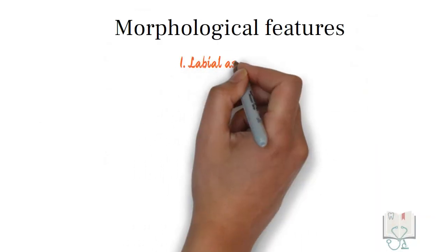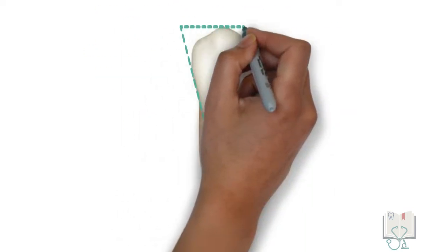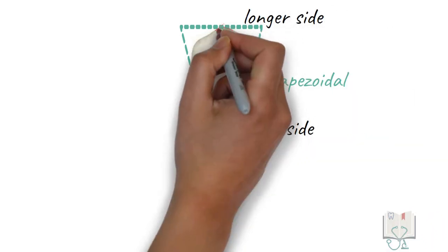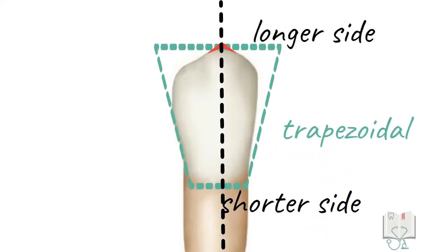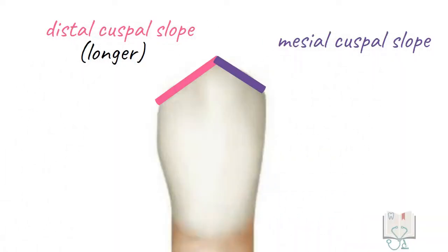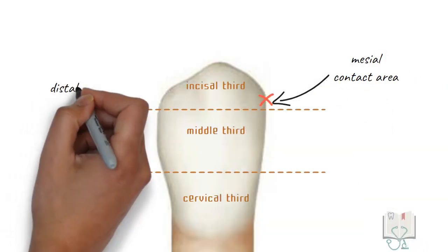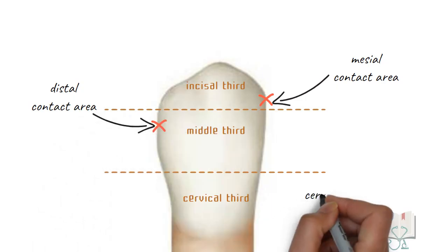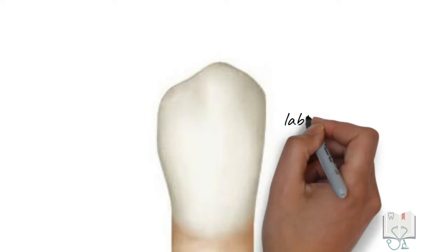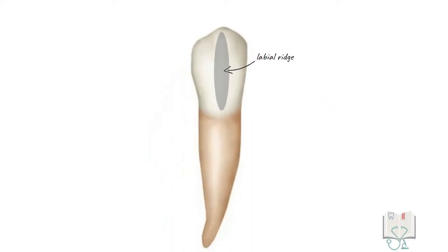The morphology of the crown is studied under five aspects. Let us start with the labial aspect. The outline form of the crown is trapezoidal with its longer side towards the cusp and the shorter side towards the cervical line. The cusp tip lies on the midline axis of the tooth. Among the two cuspal slopes running from the cusp, the distal cuspal slope is longer than the mesial cuspal slope. Coming to the contact areas, the mesial contact area is in the incisal third and the distal contact area is in the middle third. The cervical line is convex with its convexity towards the root. The labial surface shows a labial ridge running from the cusp tip to the cervical line. A single root is present which is smooth and conical.